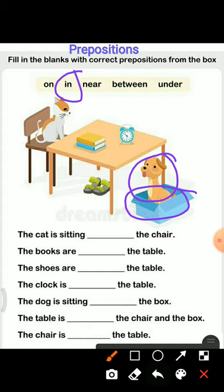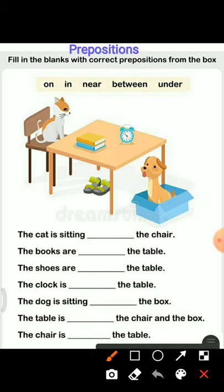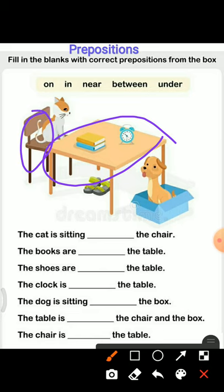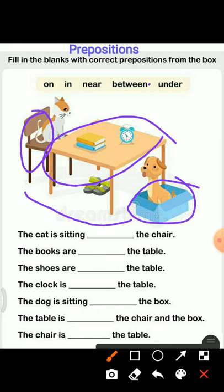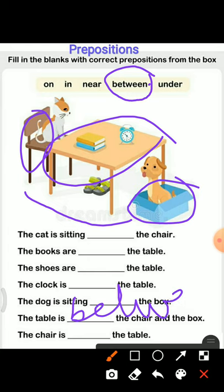Next one: the table is ___ the chair and the box. See children, this is the table, this is the chair, and this is the box. Where is the table? The table is between the box and the chair. So we will choose the correct word from the box: between. B-E-T-W-E-E-N, between. The table is between the chair and the box. Between means in the middle — the table is between the chair and the box.